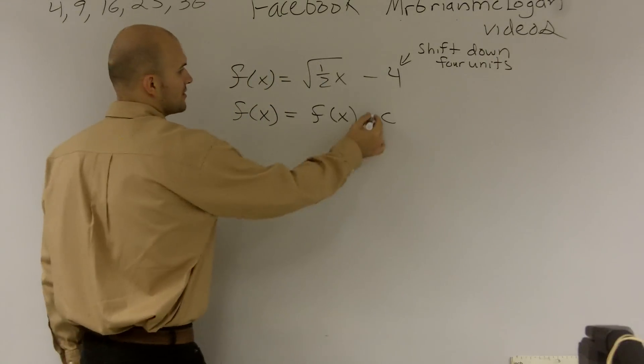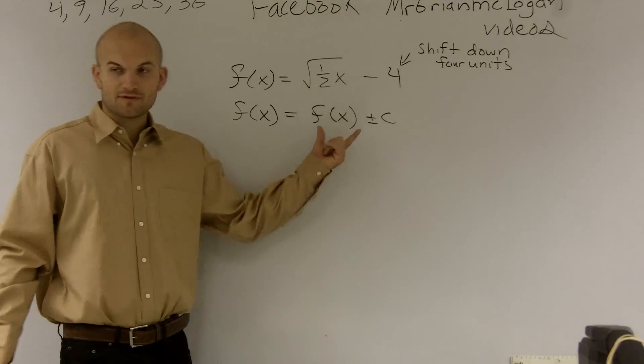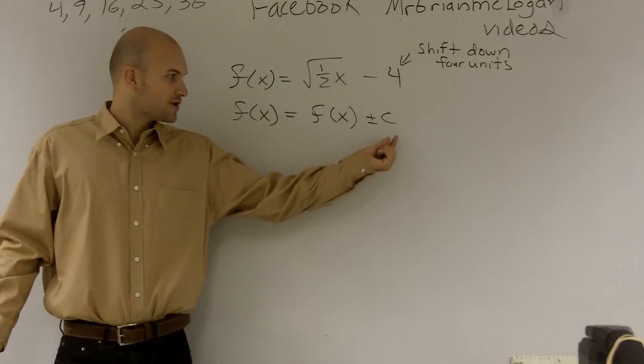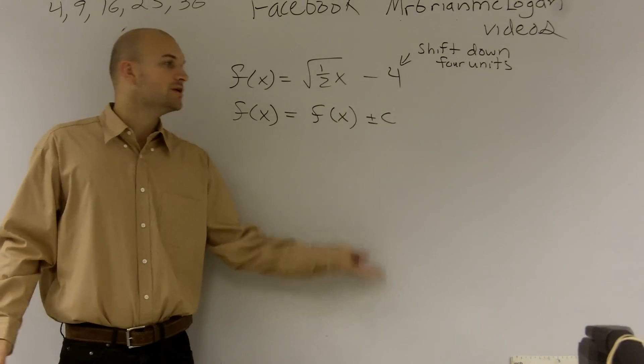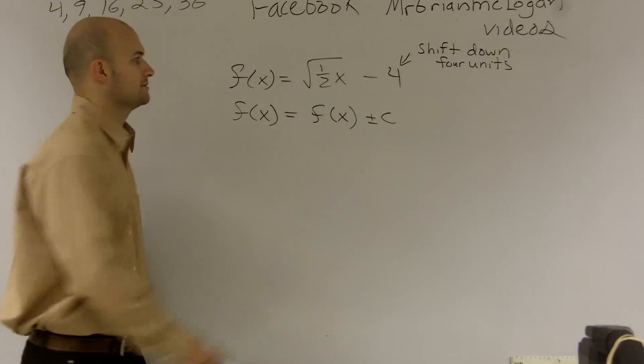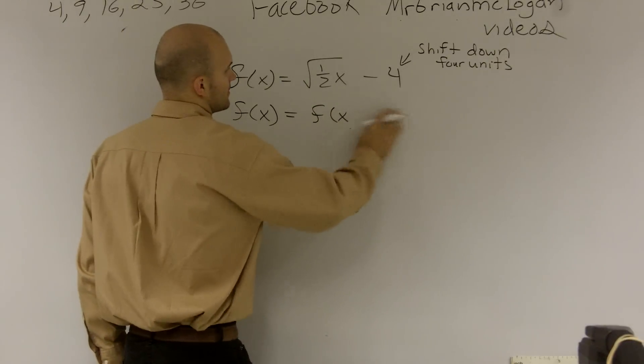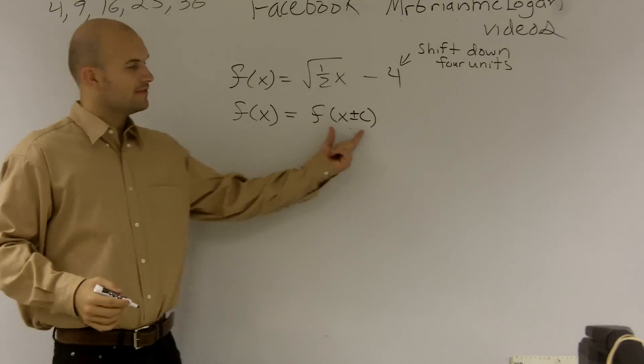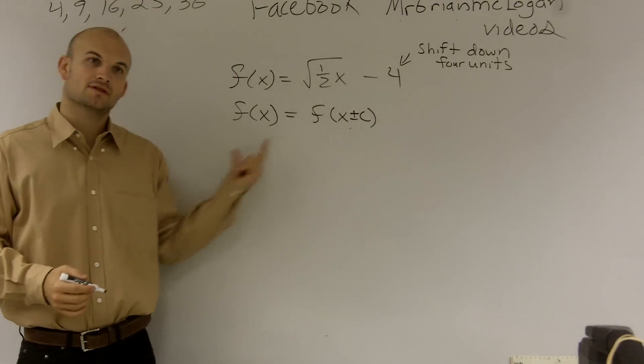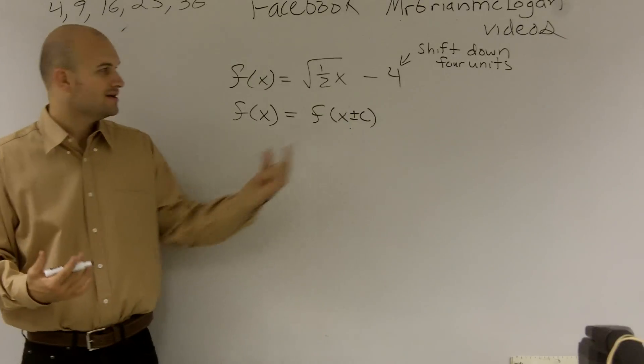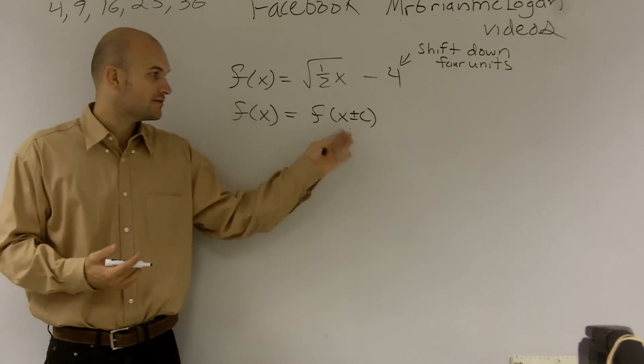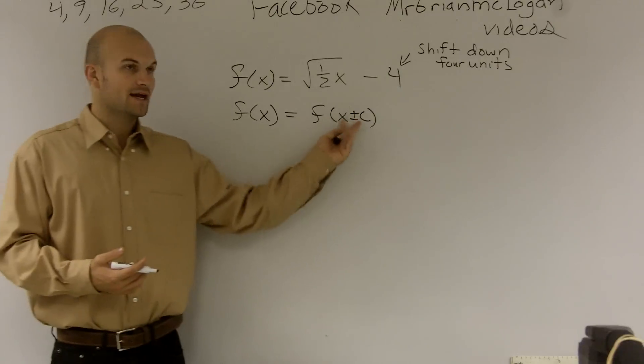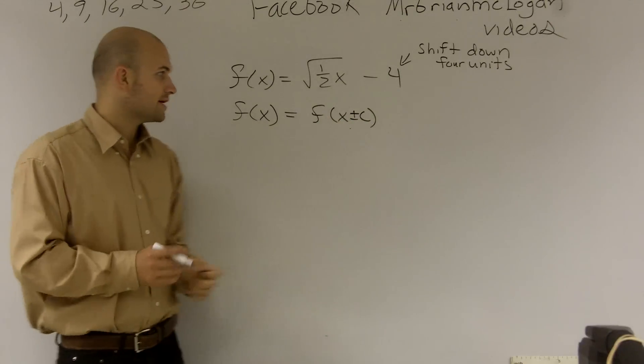All right, so that was your plus or minus. Remember, whenever you have your function and you're adding or subtracting any kind of number, that's going to tell you if you're shifting up or down. And if we were going to do plus or minus inside of the function, that's going to tell us to shift our graph left or right. And remember, for right now, that's always going to be the opposite. If it's positive, it actually means you're shifting to the left. And if that's a negative c, you're actually going to shift it to the right.